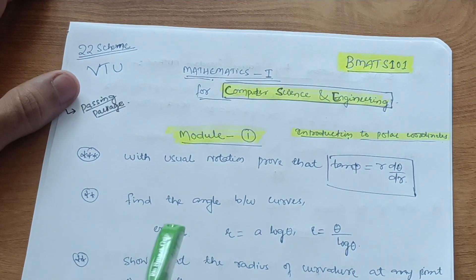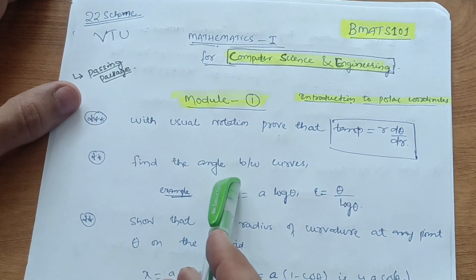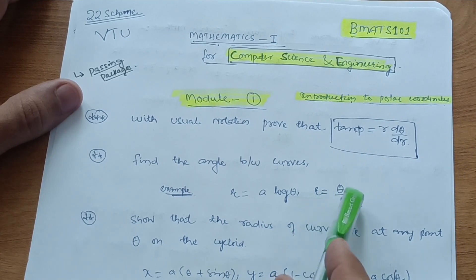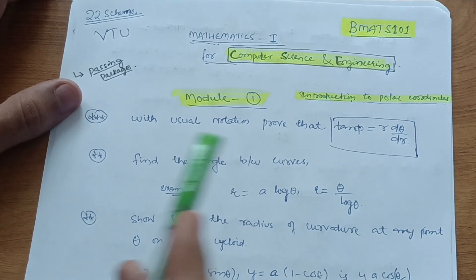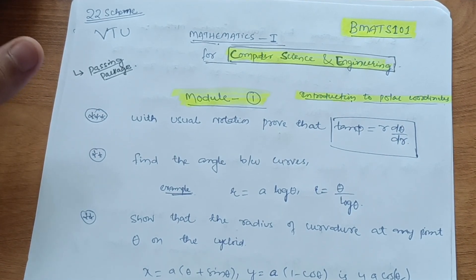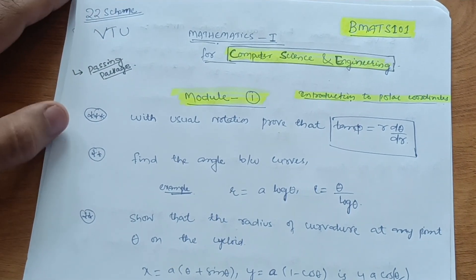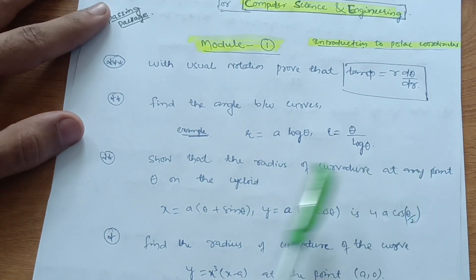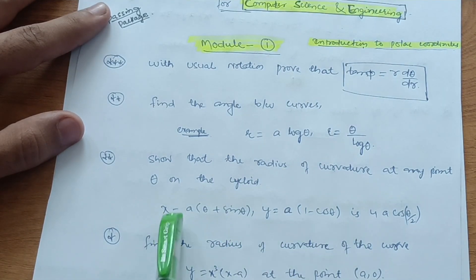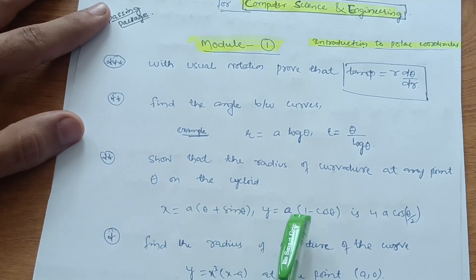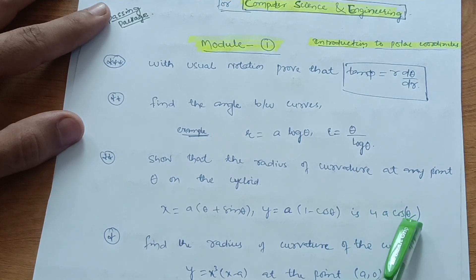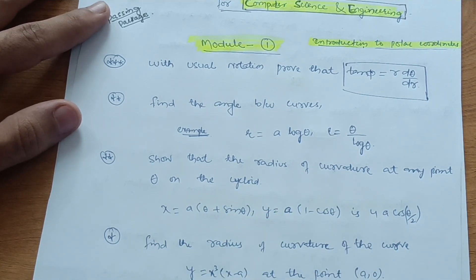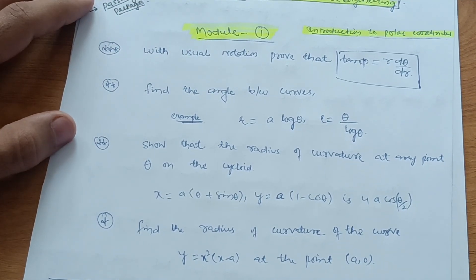Next, find the angle between curves. There are a variety of problems — I have taken the example r = a log θ and r = θ / log θ. Just do three or four problems, as you cannot focus on all of them. Then another important question: show that the radius of curvature at any point on the cycloid x = a(θ + sin θ), y = a(1 − cos θ) is 4a cos(θ/2). These three concepts are very important.